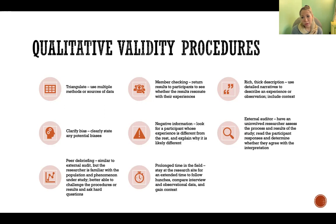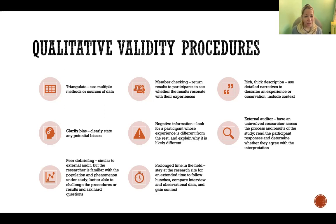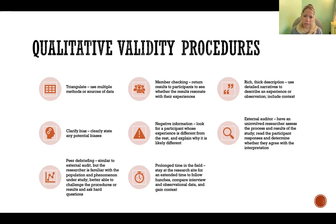For example, you might interview a group about their physical activity — how likely they are to choose the stairs over the escalator. If you hang around their setting and observe, you can verify whether they do tend to take the stairs, or whether they claimed they did but you're seeing everyone take the escalator. That's a way to add validity to your data.